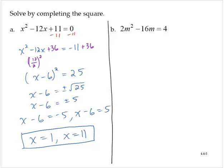2m squared minus 16m equals 4. I will divide both sides by 2 to put this in the form m squared plus bm equals k. So then m squared minus 8m, I'll leave a space there, is 2.